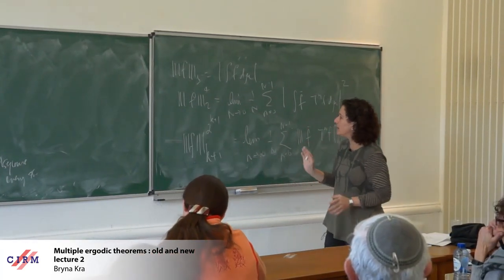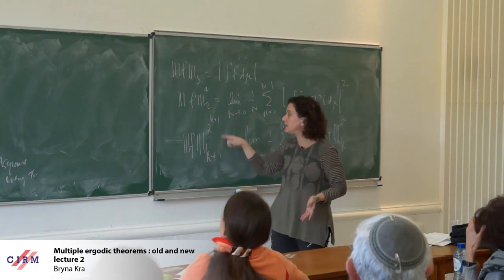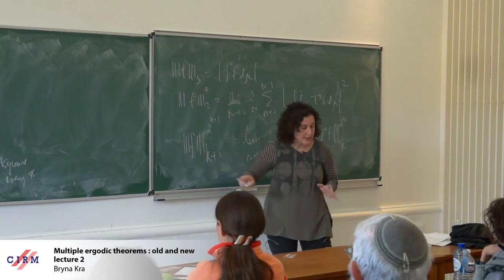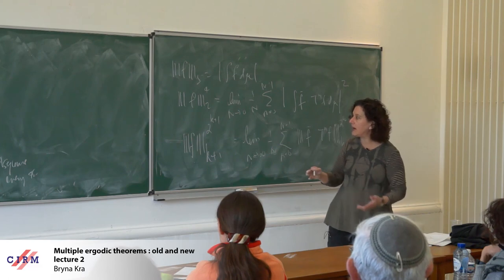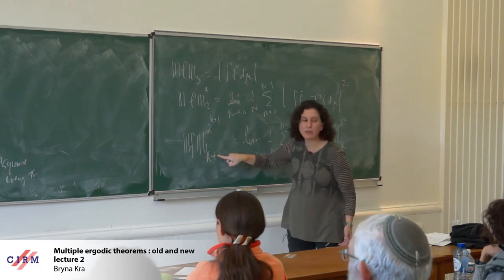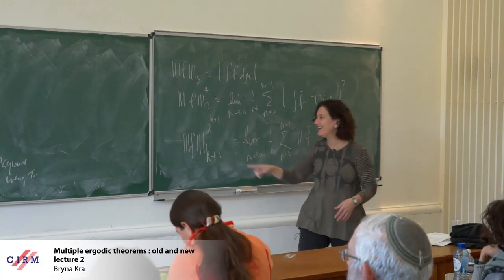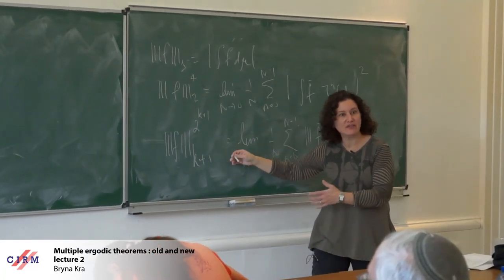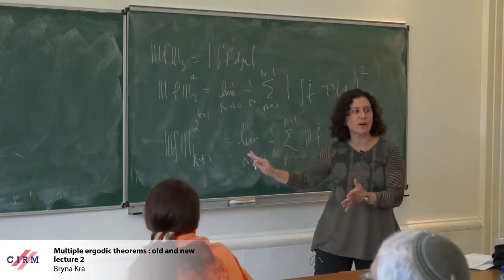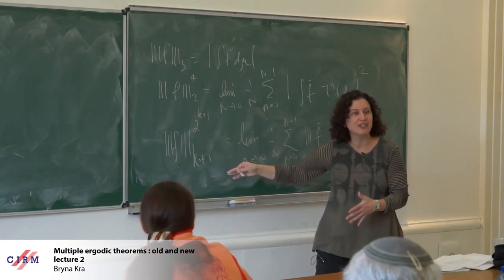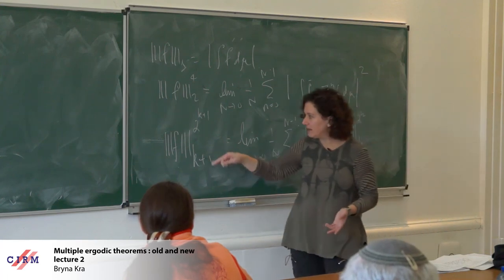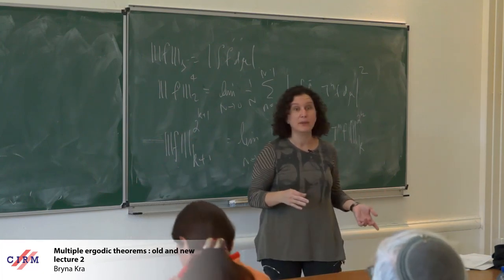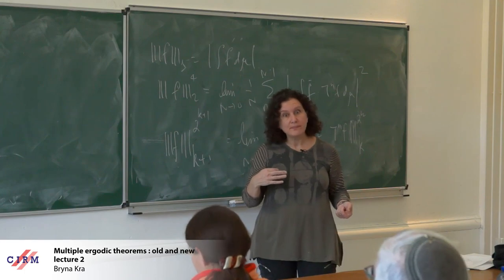The relation between this and the previous structure theorem is that these semi-norms define factors of my system. Another definition we could take is that these nil factors are exactly where the semi-norm is zero — the (k+1)th semi-norm is exactly the collection of bounded functions such that the expectation on this factor is zero. That requires work — I'm saying things that need proof — but they can be used to define the factors, and those are exactly the factors that are inverse limits of nil systems from the first version of the structure theorem.